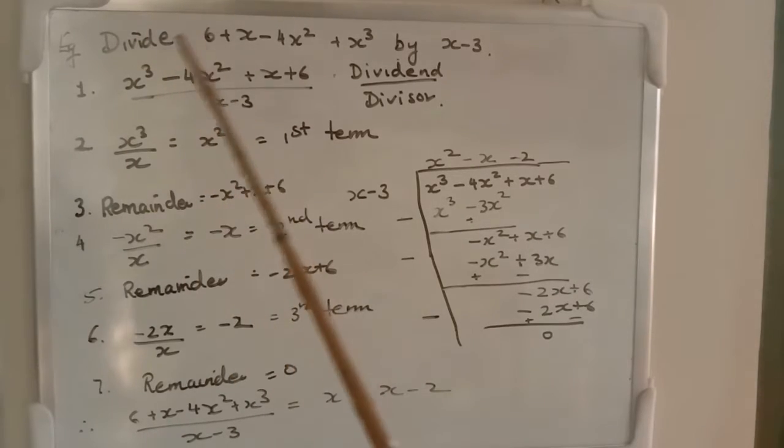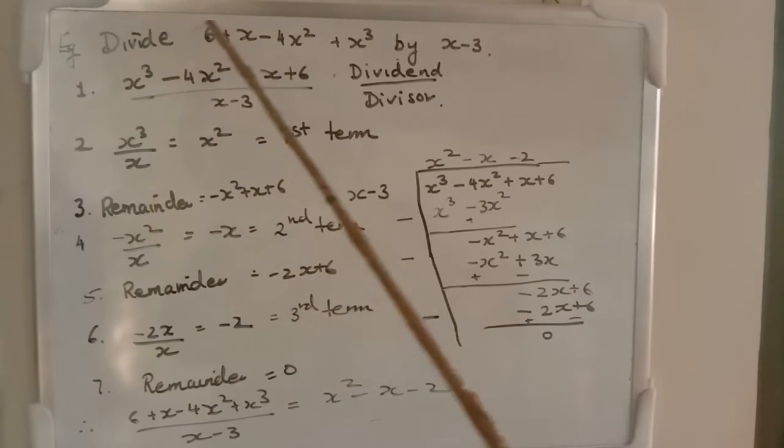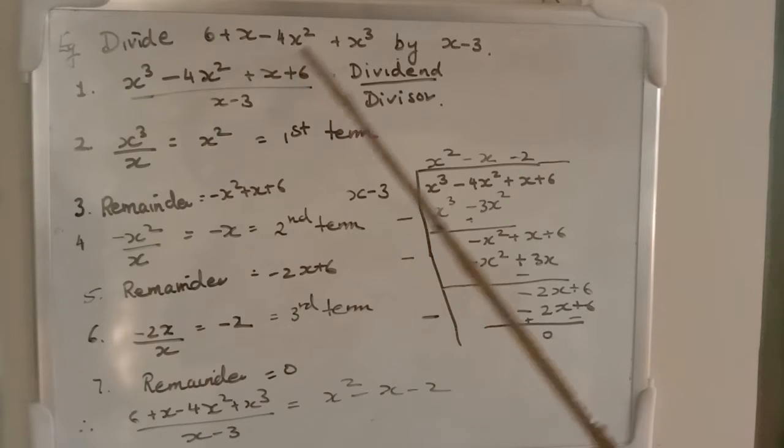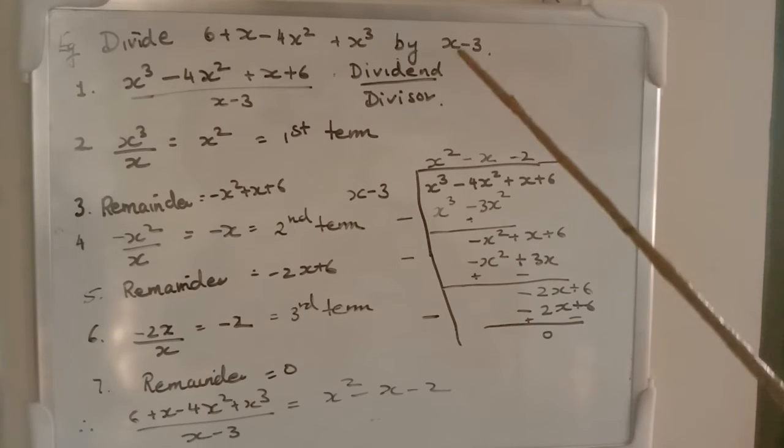To do the long division method, let's take an example. We have to divide 6 + x - 4x² + x³ by x - 3.